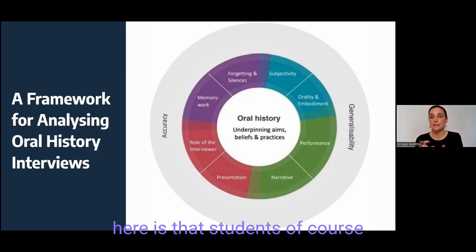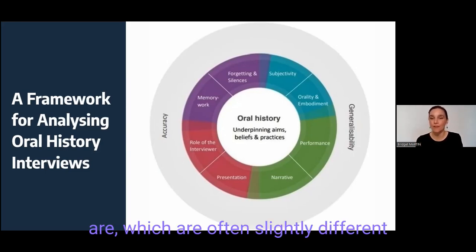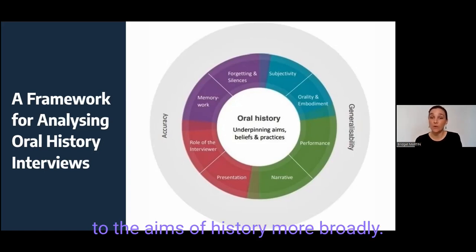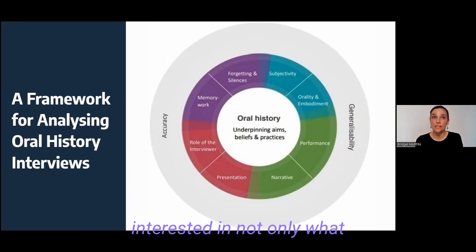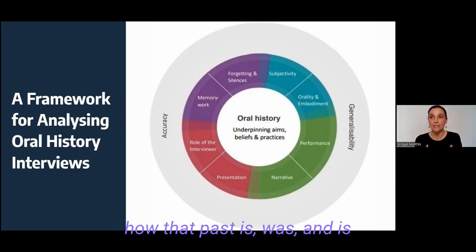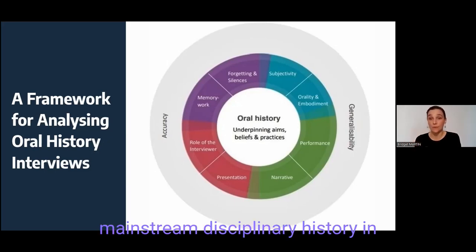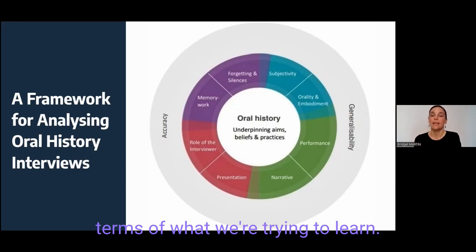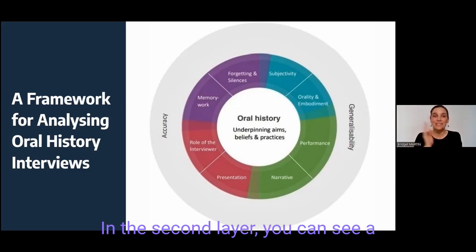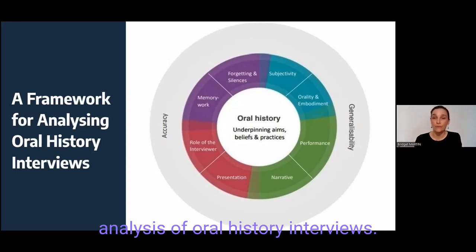What you can see in the center here is that students, of course, need to really understand what oral history is in order to be able to analyze the sources — what its aims are, which are often slightly different to the aims of history more broadly. Particularly, oral historians are interested in not only what happened in the past, but also how that past was and is experienced and remembered by different individuals. So it can be slightly different to other portions of mainstream disciplinary history in terms of what we're trying to learn. And there are certain beliefs and practices that go along with oral history.